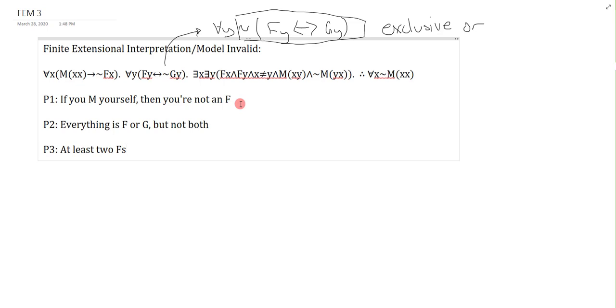So I can say there are at least two Fs, and M(x,y) and not M(x,y). What does that mean? They M each other one way, but not the other.